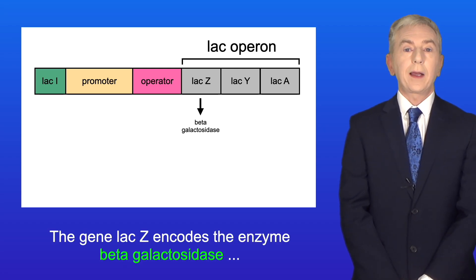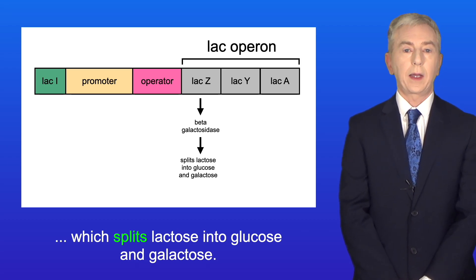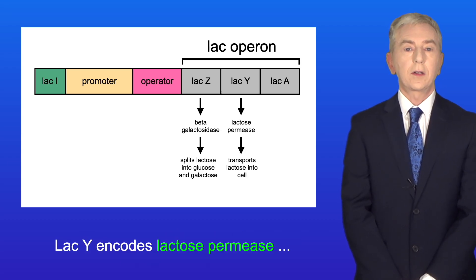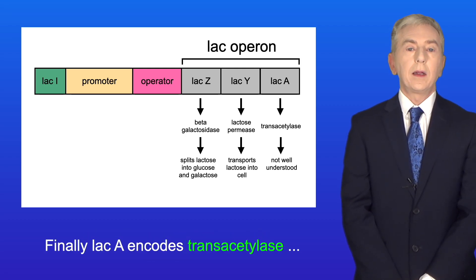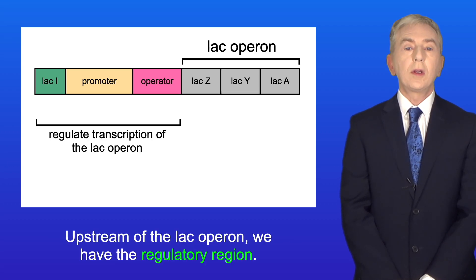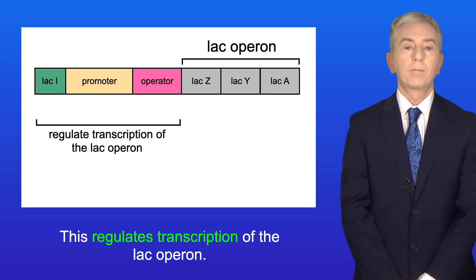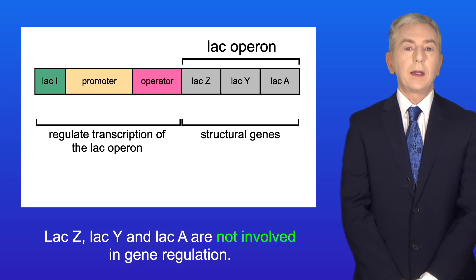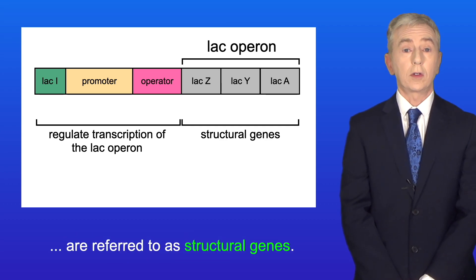The gene lac Z encodes the enzyme beta-galactosidase, which splits lactose into glucose and galactose. Lac Y encodes lactose permease, which transports lactose into the cell. And finally, lac A encodes transacetylase, which is not well understood in the metabolism of lactose. Upstream of the lac operon we have the regulatory region, which regulates transcription of the lac operon. Lac Z, lac Y, and lac A are not involved in gene regulation and are referred to as structural genes.